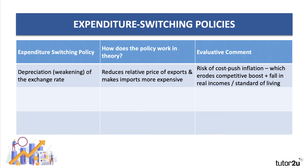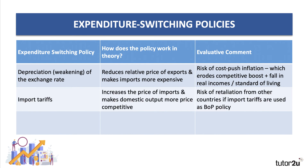So those are three expenditure switching policies. Let's do a quick evaluation. A depreciation or weakening of the exchange rate makes exports relatively cheaper overseas and makes imports relatively more expensive. One evaluative point is that if your exchange rate depreciates, the risk is you get higher inflation because imports become more expensive — whether that's imported energy, food, or component parts. That cost-push inflation could actually erode, in other words take away, some of the competitive boost given by the fall in the exchange rate. Also, higher prices mean that real incomes and living standards may take a hit.